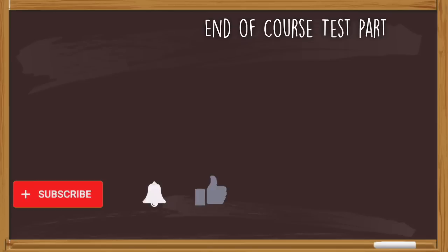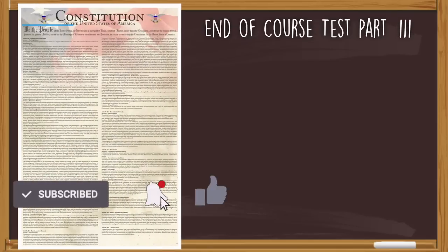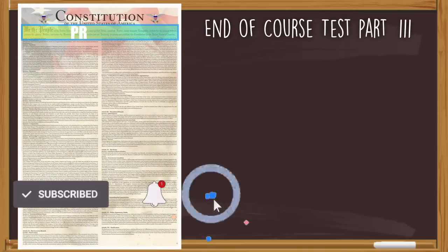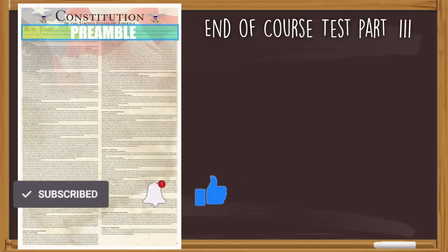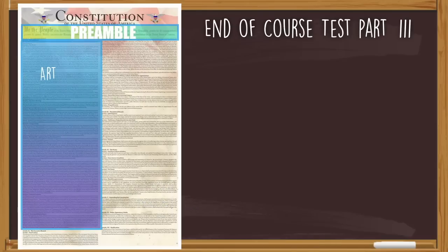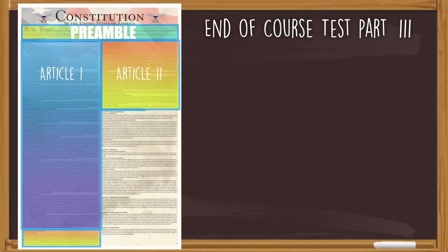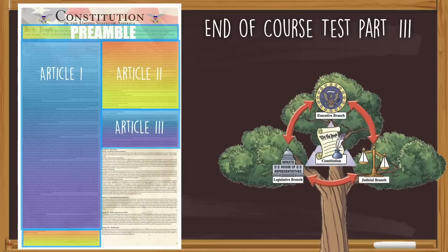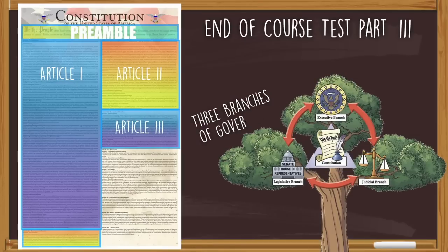When last we left off in this video series, we were talking about the preamble to the Constitution — and that was a lot. But unfortunately, that's just the introduction. Quarter three covered everything else. So we're going to run through the three branches of government: the legislative branch, the executive branch, and the judicial branch.